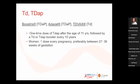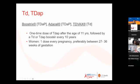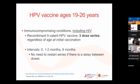For Td and Tdap — one-time dose of Tdap after the age of 11 years, similar to people living without HIV, followed by either a Td or Tdap booster every 10 years. Women receive one dose of Tdap every pregnancy between 27 to 36 weeks. No changes in this recommendation.